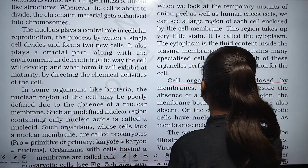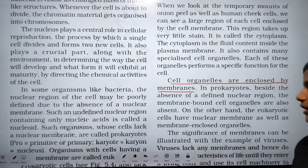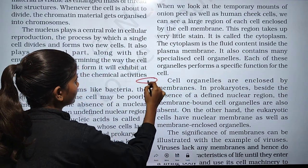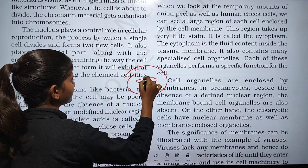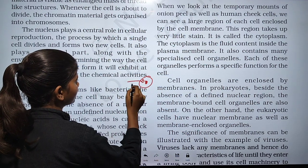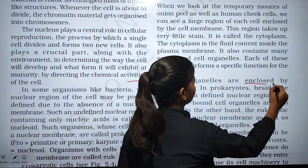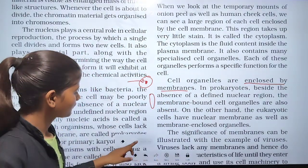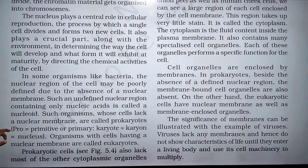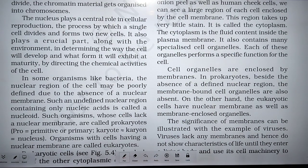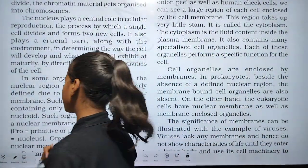Cell organelles are enclosed by a membrane. For example, mitochondria are enclosed by a membrane and are present in the cytoplasm. There are double-membrane boundary organelles as well as single-membrane boundary organelles present in the cytoplasm.